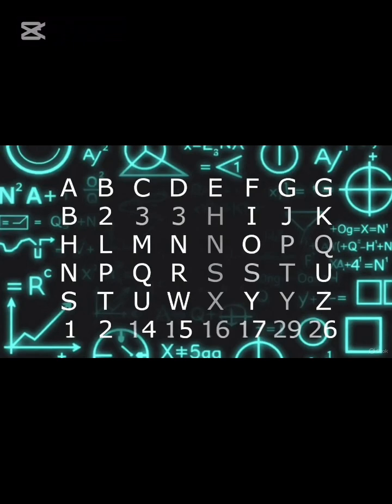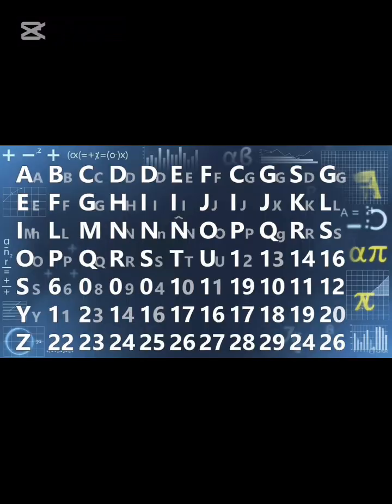Every letter in the alphabet can be represented by a number. A equals 1, B equals 2, C equals 3, and so on, up to Z equals 26. This is called the alphanumeric code.